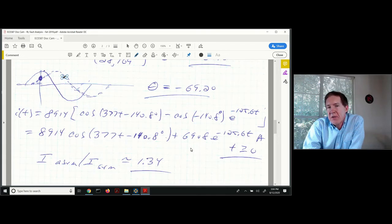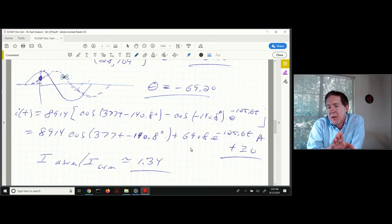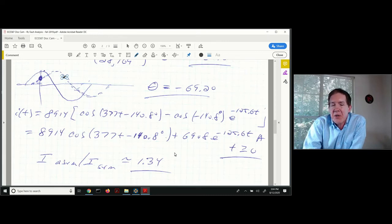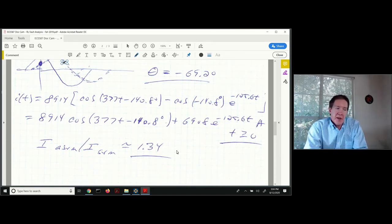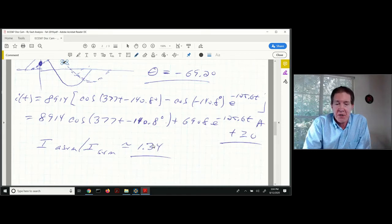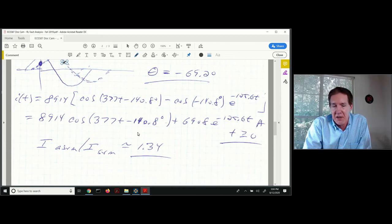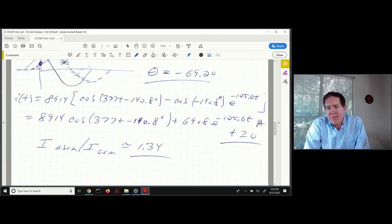Now, I might ask you, what's the ratio of the asymmetrical to symmetrical current? In other words, what's the peak instantaneous value divided by the value that we have in steady state? In this particular case, it turns out to be 1.34. But how do you get that particular value? One way would be you can just plot it out. You could plug this expression into MATLAB and plot it out, and you can get the value that way.